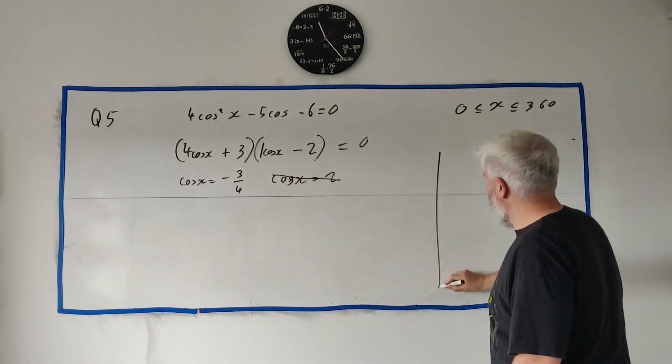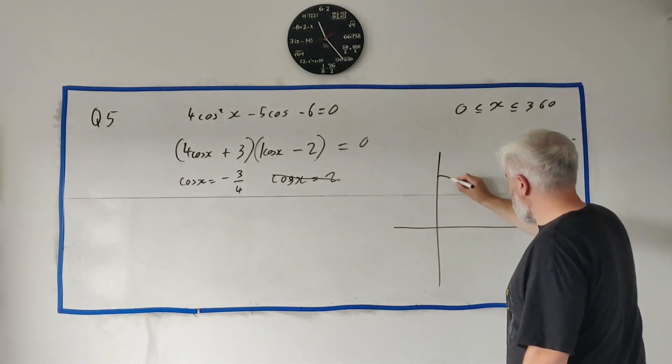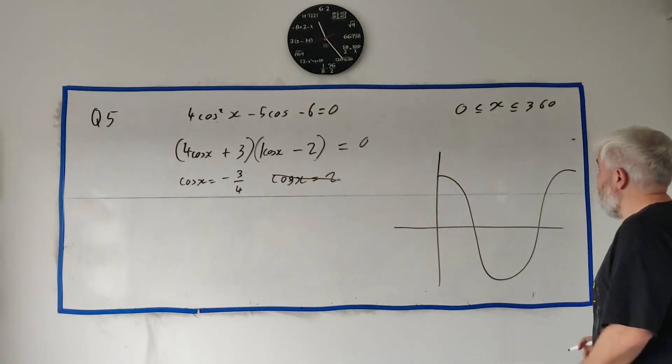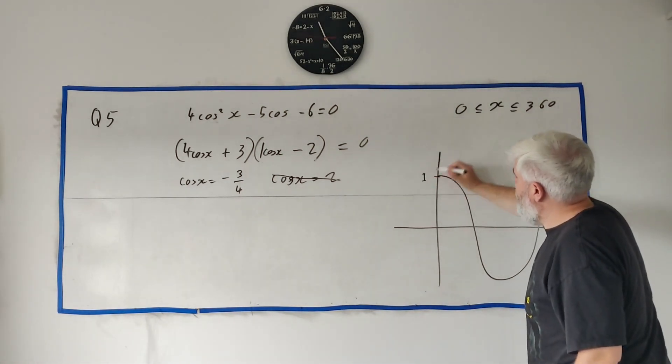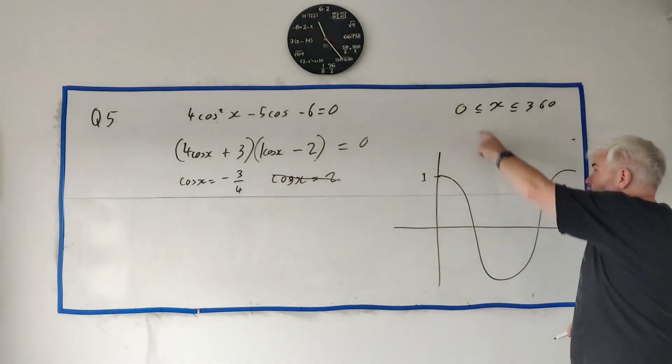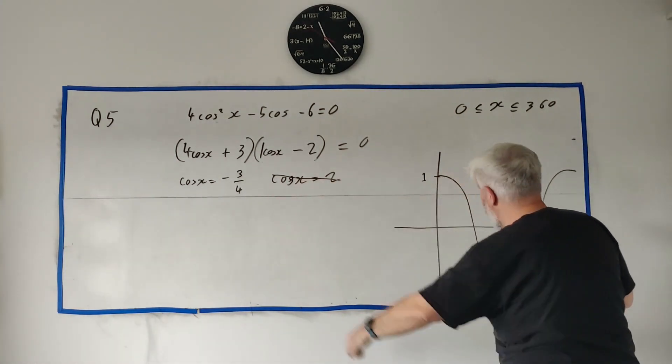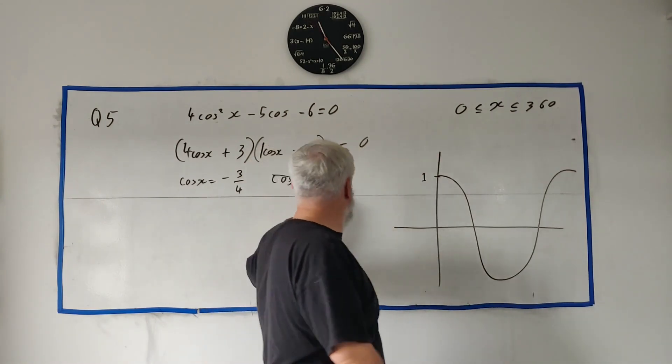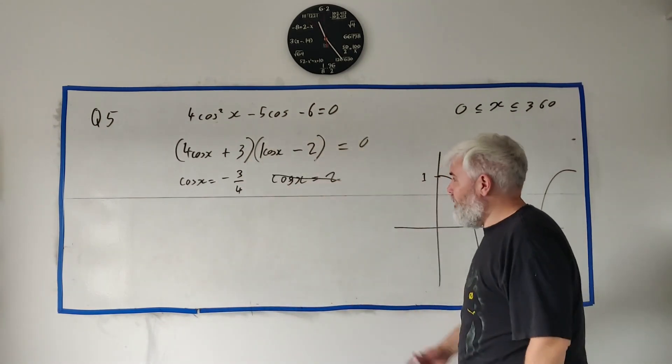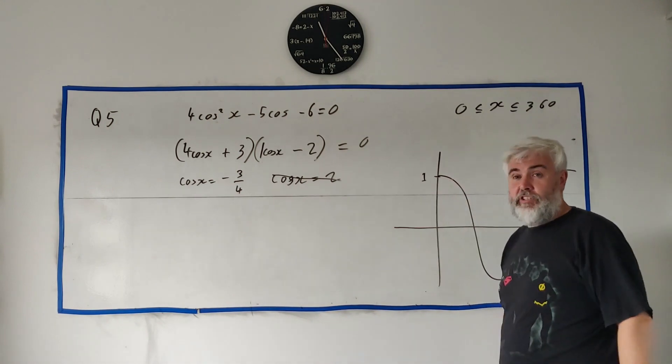Because remember cosine x equals two. I'm going to need to draw this anyway. So cosine looks something like this between zero and 360. This is one. Two is all the way up here. Cosine never hits two. It goes on forever that way. It never hits two. Cosine x just can't hit two. It can't have an answer. So we just ignore that one.